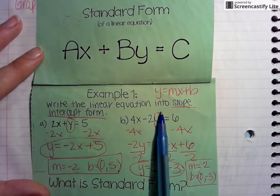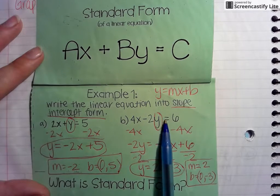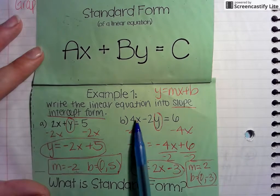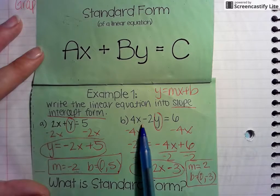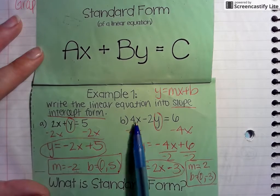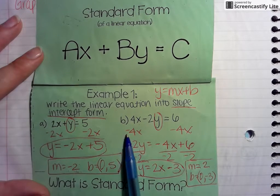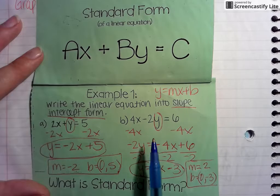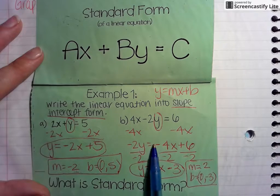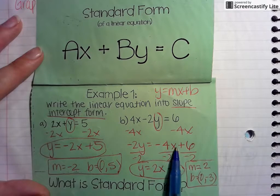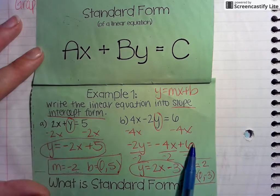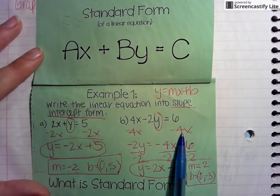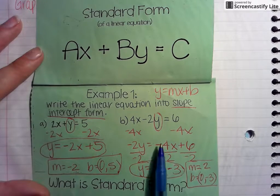For this one, we always want to circle y and get it by itself. To get y by itself, we first want to move our x. Notice it's a positive 4x, so we subtract 4x on both sides. So we get negative 2y equals negative 4x plus 6, because you can't combine the 6 and the negative 4x since they're not like terms.